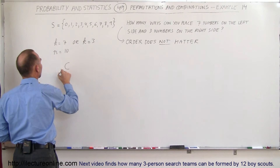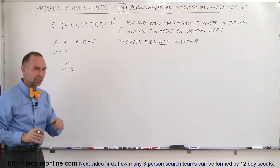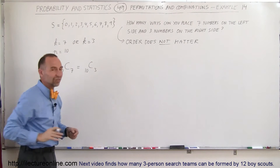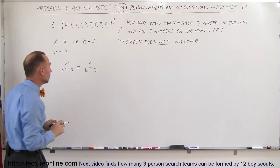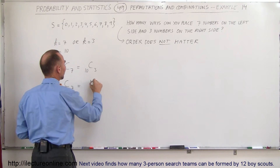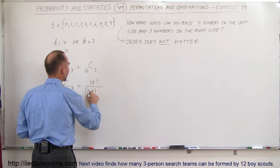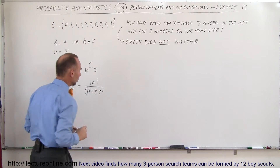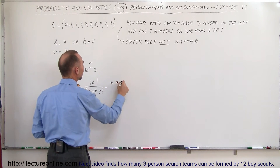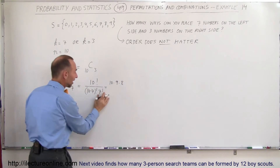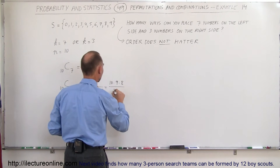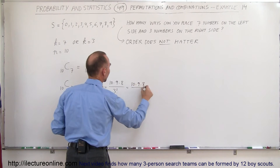The number of combinations when you have 10 numbers and place 7 on one side and 3 on the other is the same as looking for combinations with 10 numbers placing 3 on one side — you get the exact same result. So the number of combinations C(10,7) equals 10 factorial divided by (10 minus 7) factorial times 7 factorial. Working this out: 10 factorial divided by 7 factorial equals 10 times 9 times 8, since 7 factorial cancels. Then we still have 3 factorial in the denominator, so divided by 3 factorial, which gives 10 times 9 times 8 divided by 6.